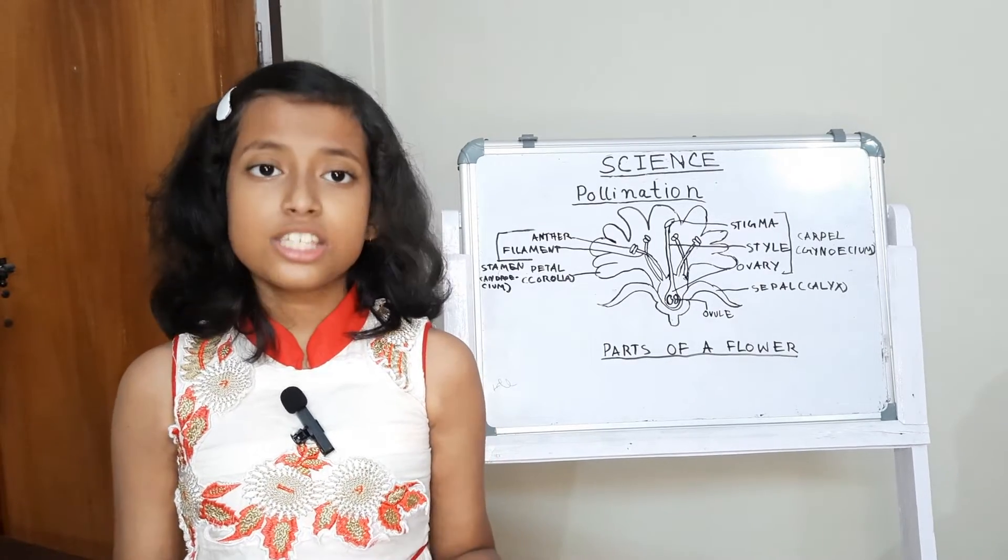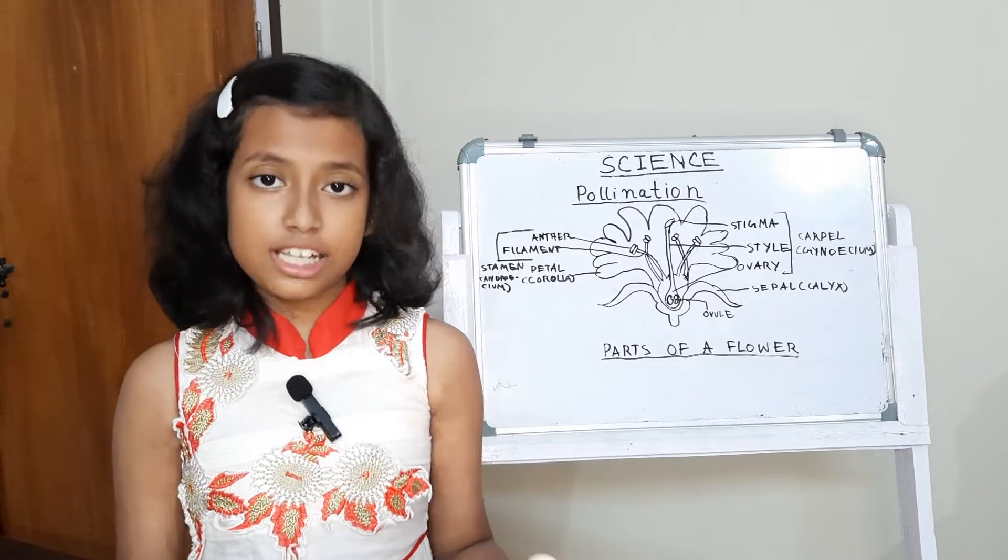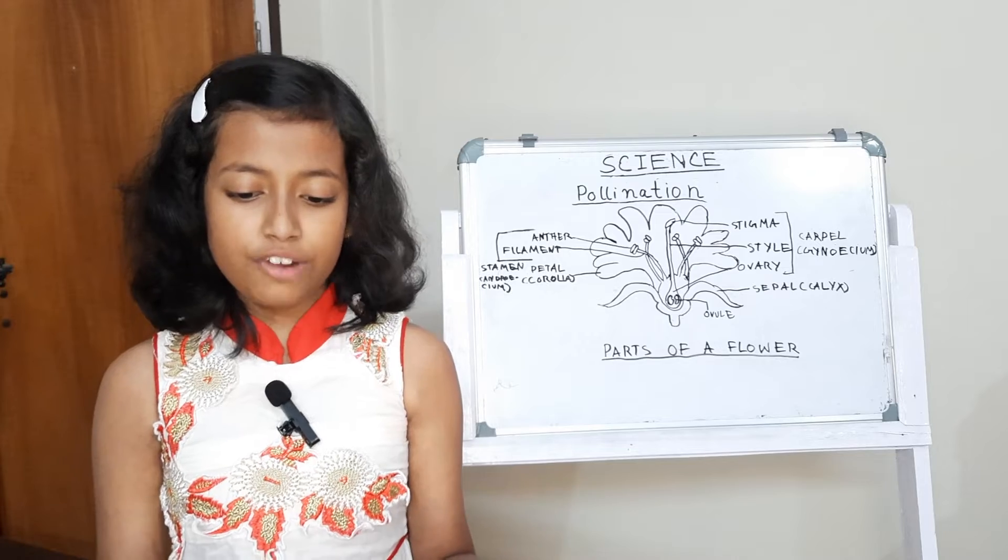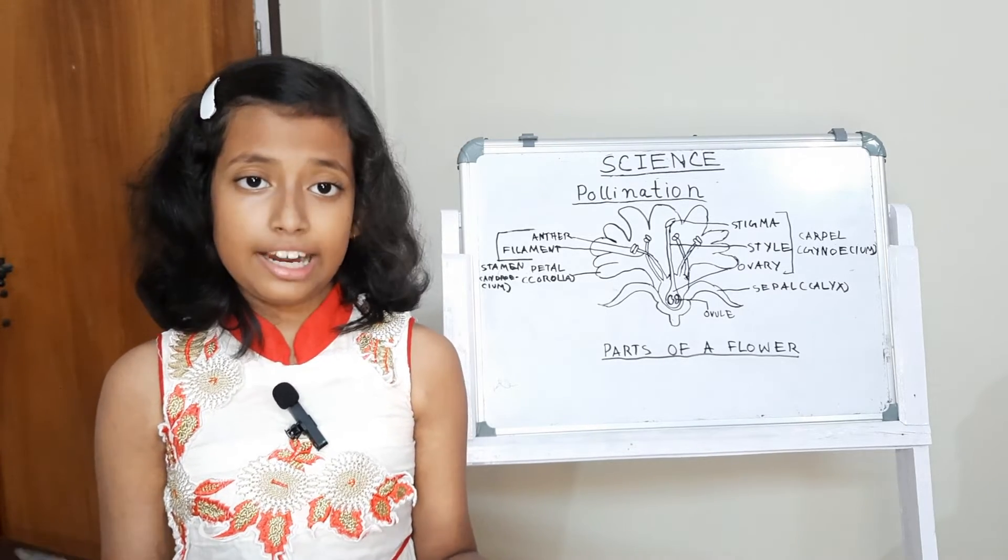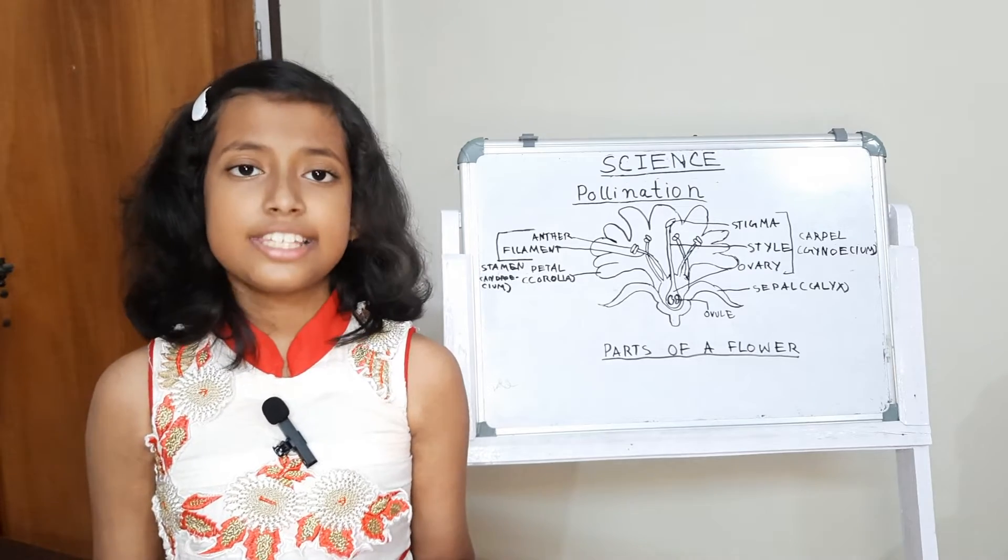Corolla. The next whorl consists of petals. All petals together are called corolla. They are the most prominent part of a flower. They are usually brightly coloured and may produce scents to attract insects.